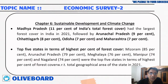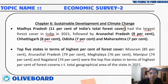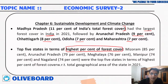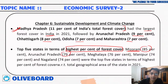Madhya Pradesh has the largest forest cover in India at 11 percent of India's total forest cover, followed by Arunachal Pradesh at 9 percent, Chhattisgarh at 8 percent, and Odisha and Maharashtra each at 7 percent. In terms of highest percentage of forest cover relative to state land area, Mizoram leads with 85 percent, followed by Arunachal Pradesh at 79 percent and Meghalaya at 76 percent — all Northeastern states.